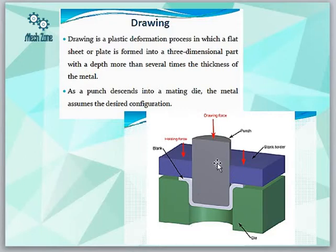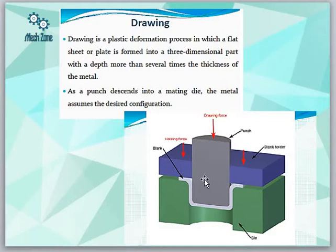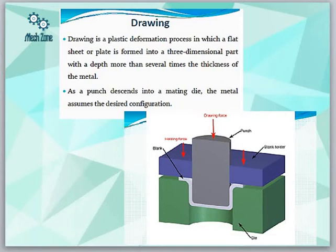This is a 3D object because we have to visualize it in three dimensions. As the punch descends into the mating die, the metal assumes the desired configuration. We are applying force from the top side onto the metallic sheet or plate, and hence it acquires the configuration of the die.